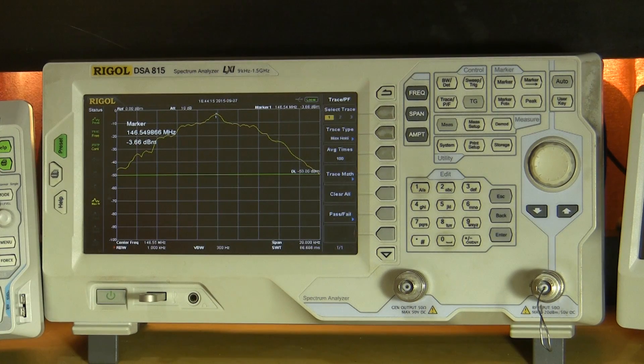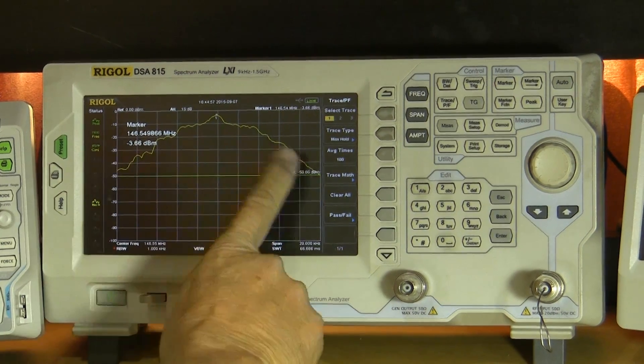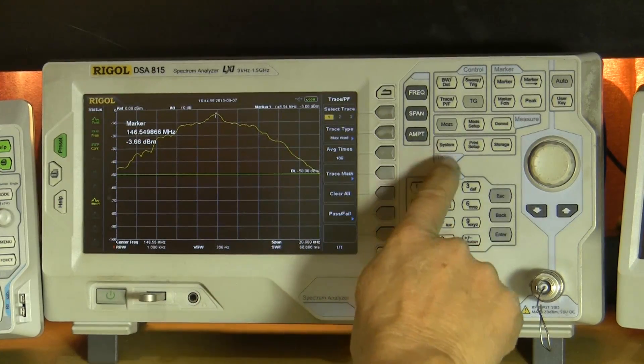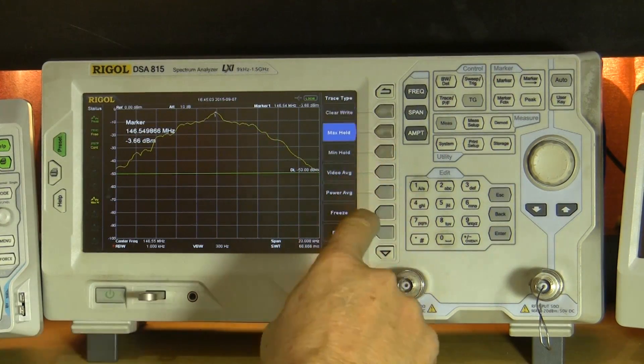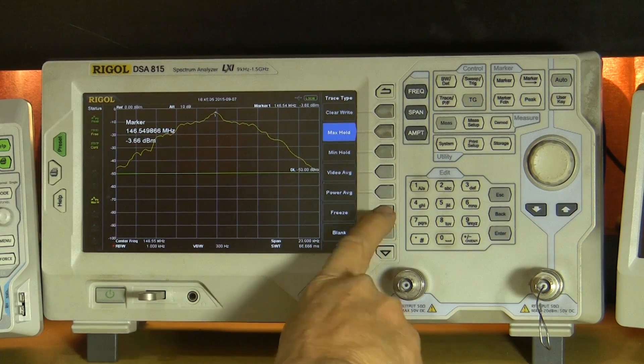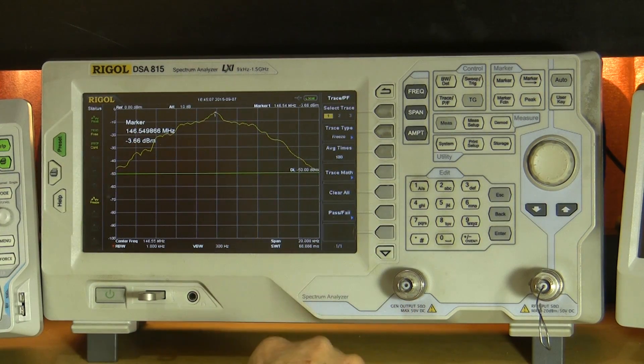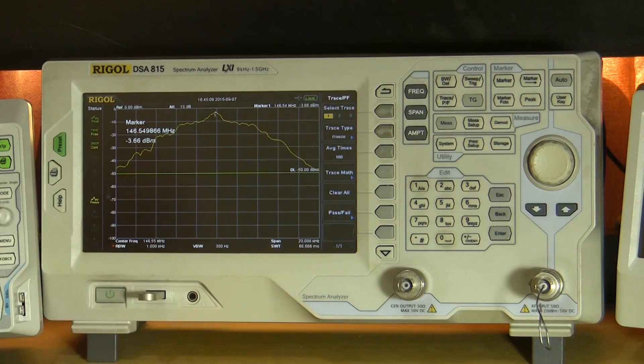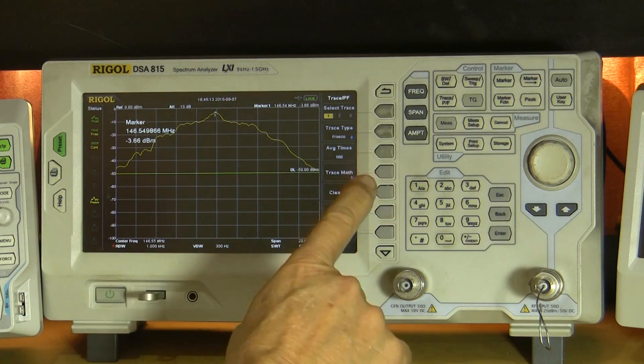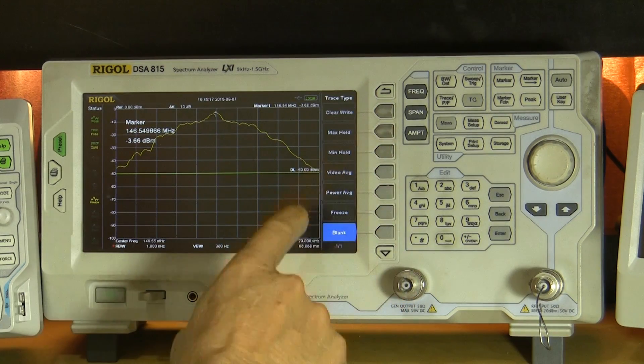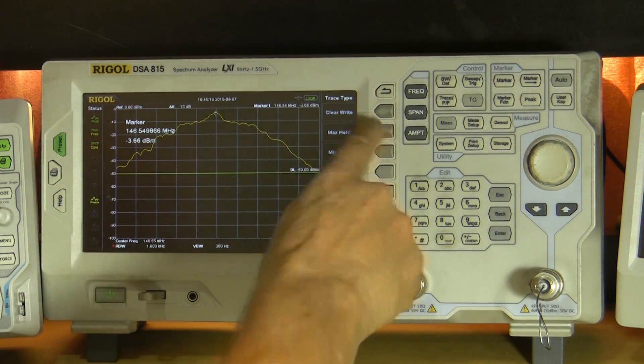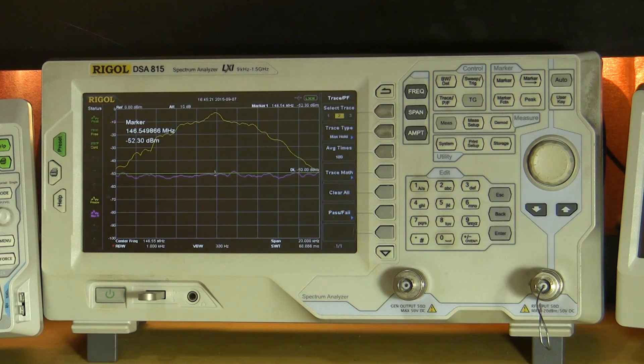All right, let's look at it when it's in the narrow mode. I'm going to leave this on the screen by going to trace here and instead of max hold, I'll change that to freeze. So now channel one or trace one is the yellow trace. That's the standard FM and I'm going to go to trace two. It's now blank. We'll go to max hold on that and I'll do the same thing I did before.